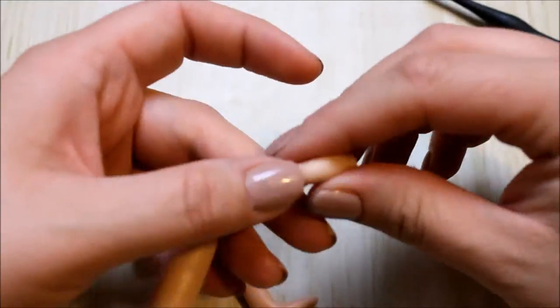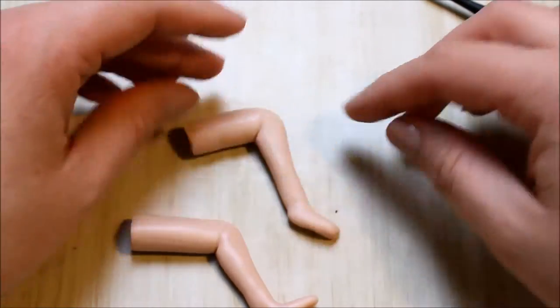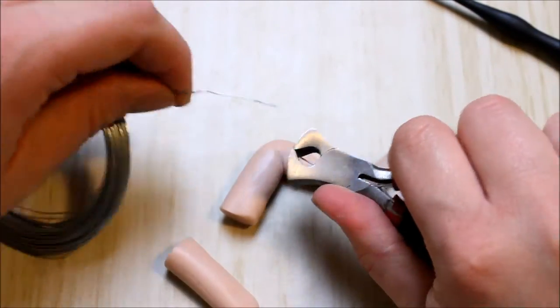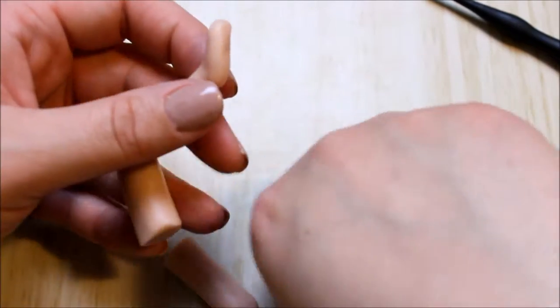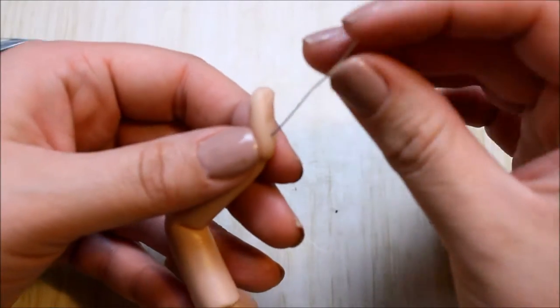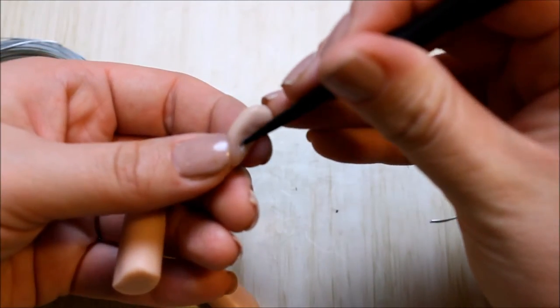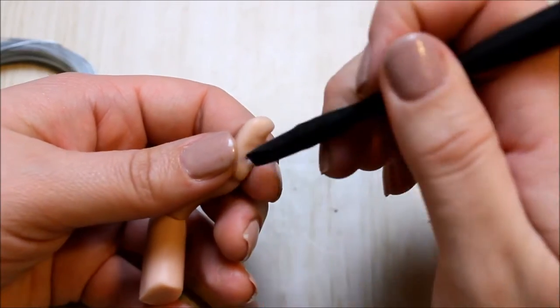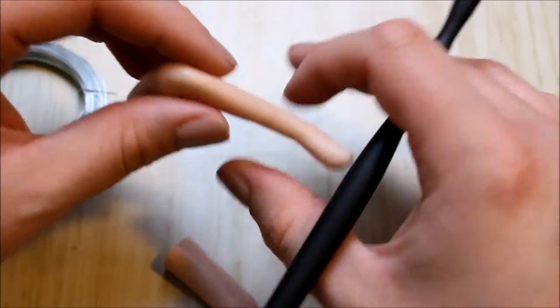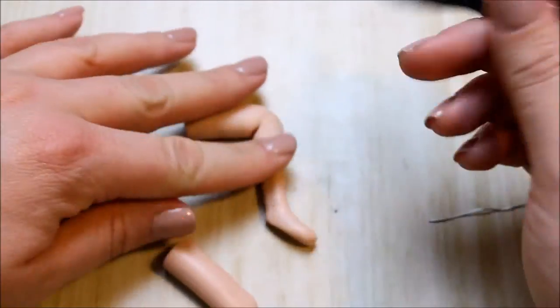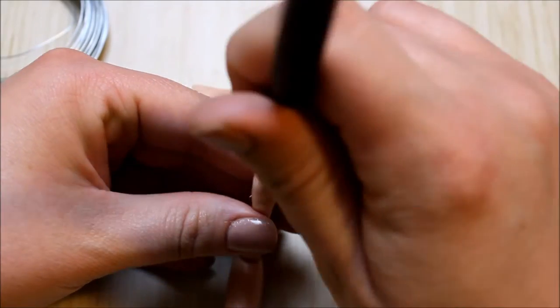I just like to add a bit of shape with the thigh, then the calf going into the ankle and then the little foot. Then I added some further little details later on. Now to secure the leg a bit more, as the clay is quite thin, I'm just adding a little piece of wire that I'm trimming to size and then shoving it gently into her foot up into her leg.